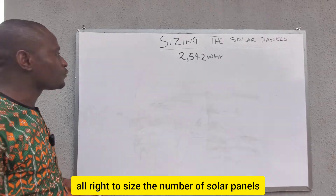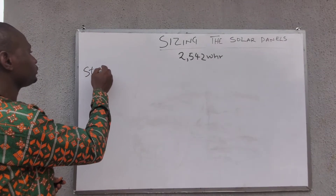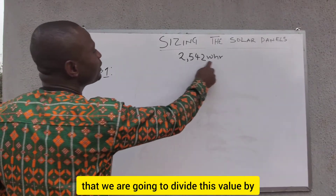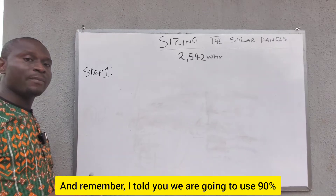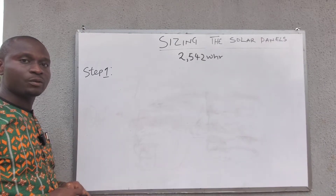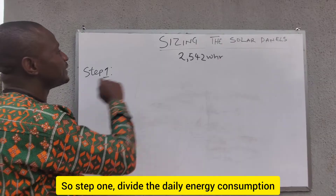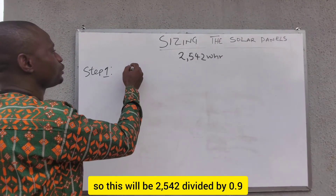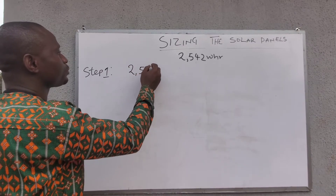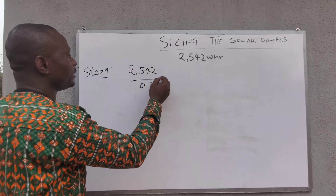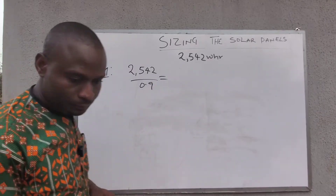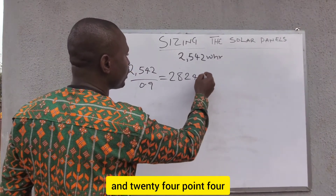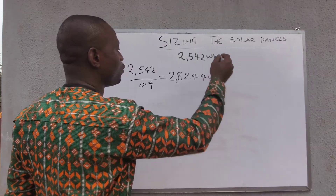Now I'm going to show you how to size the solar panels using our daily energy consumption of 2,542 Wh. Step 1: divide the daily energy consumption by the inverter efficiency. So 2,542 divided by 0.9 gives us 2,824.4 Wh.